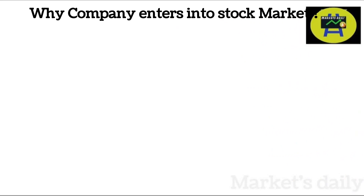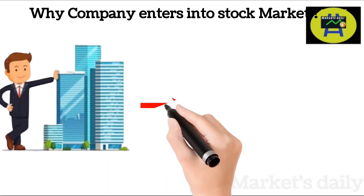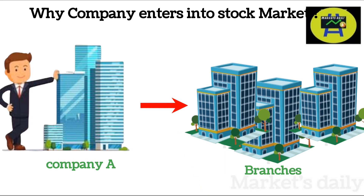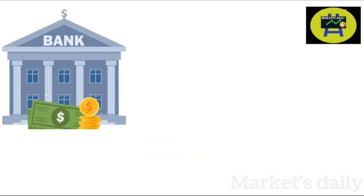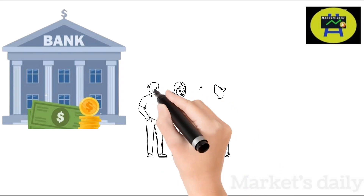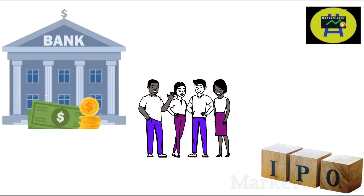Now let's see why a company comes into the stock market. The main purpose is to raise capital for the growth of the company. Let's assume a company A wants to open many branches but doesn't have sufficient money. They have three options: first, approach a bank for a loan — but the company has to pay huge interest whether they make profit or loss. Second, ask friends or family — but in that case, the friend or family member would become a partner in the business. The third option is to list the company on the stock exchange and issue an IPO.